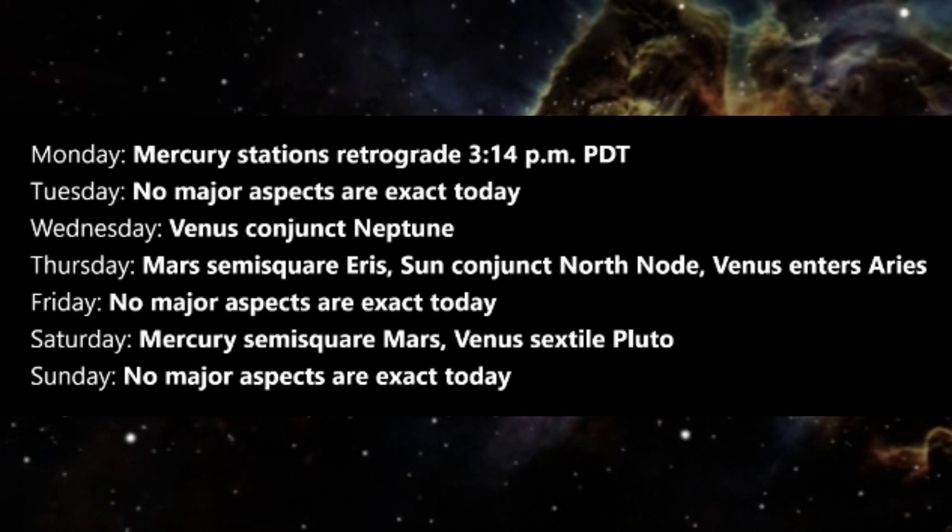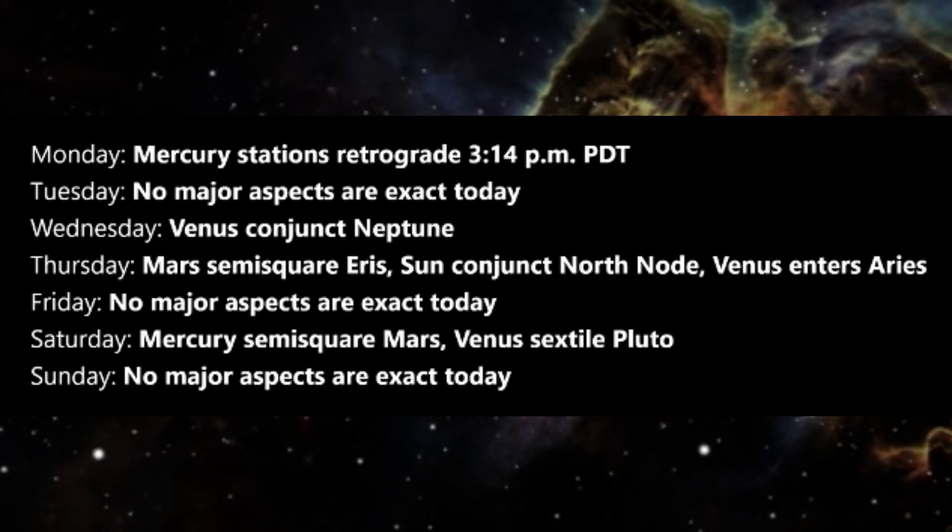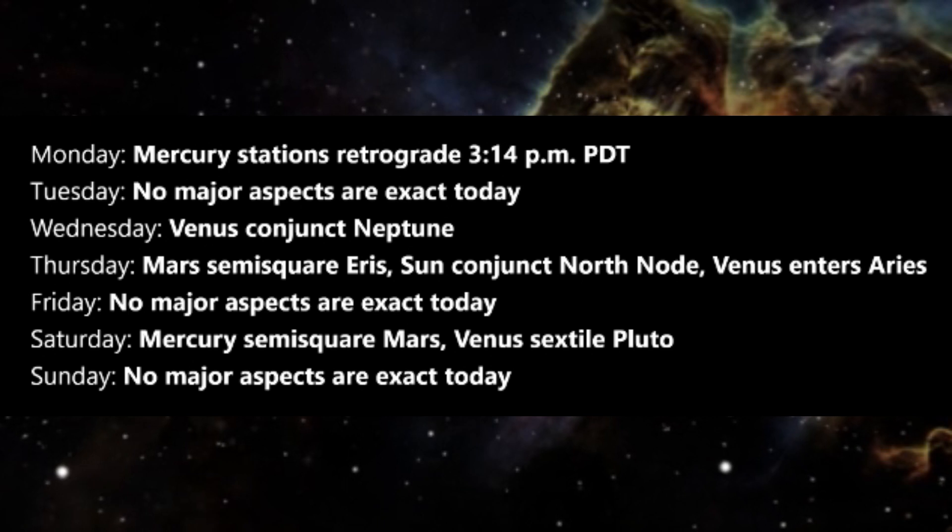Mars and Eris are the two warrior planets, and a hard aspect between them indicates potential controversies and quarrels. Also on Thursday, the Sun is conjunct the North Node.